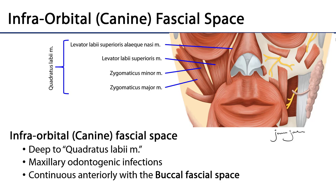The first is the infraorbital, also known as the canine, fascial space. The infraorbital fascial space is deep to a muscle group called the quadratus labii muscle, which consists of levator labii superioris alaeque nasi, levator labii superioris, zygomaticus minor, and zygomaticus major. We can see this region on the left-hand side of this individual, with the infraorbital nerve coming out of the infraorbital foramen into this space.